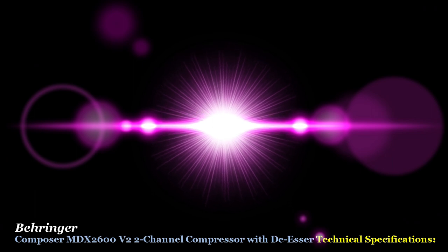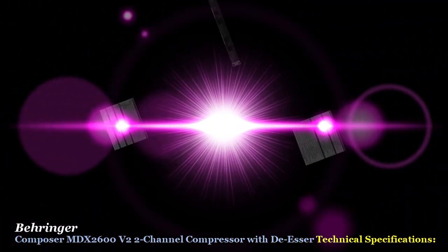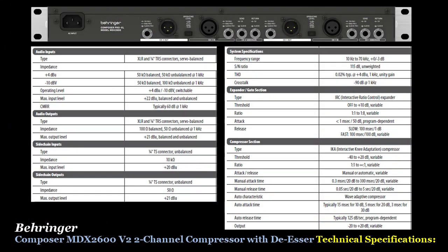Moving on to the Behringer Composer MDX 2600's technical specifications — pulled directly from Behringer to provide all the detailed information in one place. Starting with the audio input section: the inputs are XLR and quarter-inch TRS connectors which are servo balanced, along with impedance, max input level, and CMRR specifications. Next, the audio outputs are also XLR and quarter-inch TRS servo balanced connectors, with impedance and max output specifications.